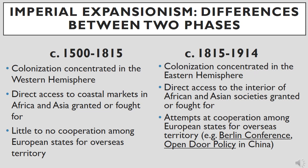As far as the Eastern Hemisphere was concerned during the first phase, European states sought direct access to coastal markets in Africa and Asia. There was little to no cooperation among the participating European states for overseas access points, territories, and resources. However, after 1815, with the initiation of the age of imperialism, industrialized nations — including European states, the United States with its Manifest Destiny — concentrated their colonization in the Eastern Hemisphere.